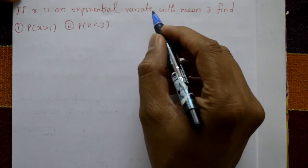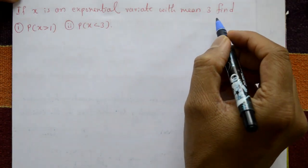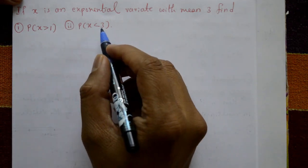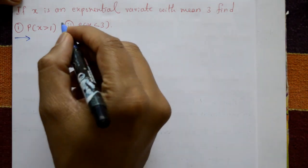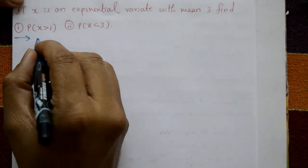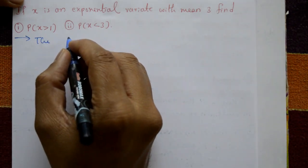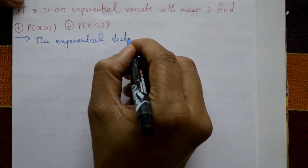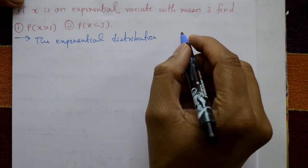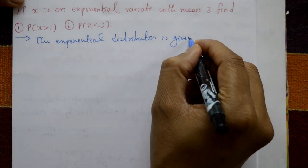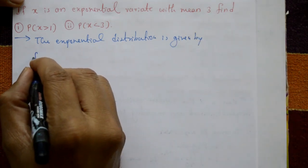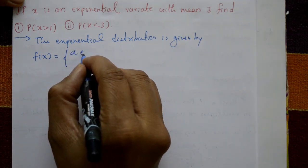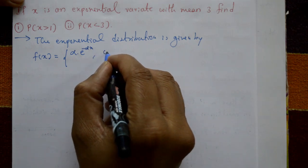If X is an exponential variate with mean 3, find the probability of X greater than 1, and in the second case, the probability of X less than 3. The exponential distribution is given by f(x) = α · e^(−αx), for 0 < x < infinity, and zero otherwise.